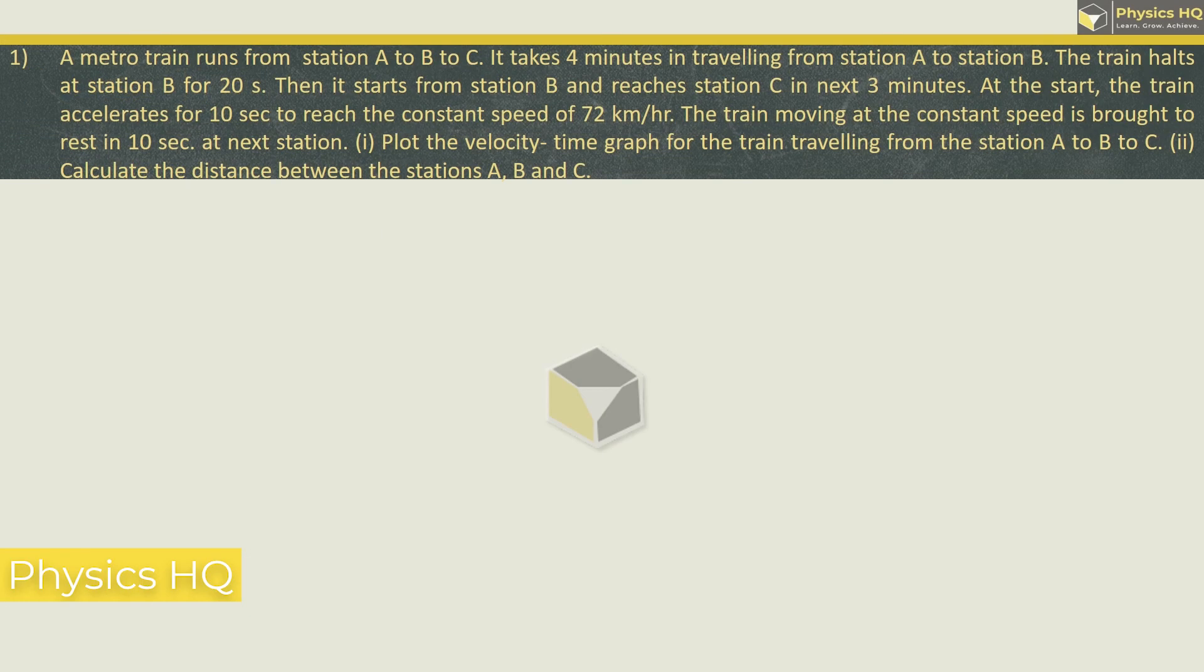Let us start with the first sum. A metro train runs from station A to B to C. It takes 4 minutes in travelling from station A to B. The train halts at station B for 20 seconds. Then it starts from B and reaches C in next 3 minutes. Let us draw this graphically. We have to plot the velocity time graph of the train. So we have to plot the vertical axis of velocity and the horizontal axis of time in seconds.